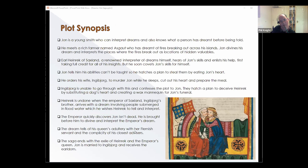And finally I produced an English translation of the saga, which as far as I can tell is the first time the whole saga has been published in English. In the saga itself, Jón, or to use the anglicized name John, is a young smith who can not only interpret dreams but he also knows what a person has dreamt before they tell him. He's introduced through a subplot involving a rich farmer named Ásgautr who's dreamt of fires breaking out across his land. John correctly guesses his dream and interprets the places where the fires break out as locations where valuables have previously been hidden by warriors returning from raids.